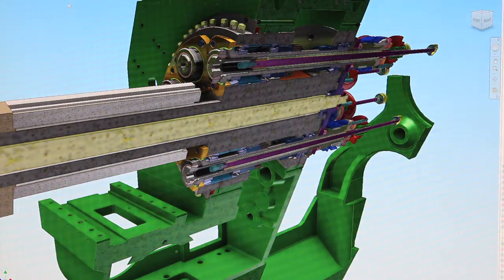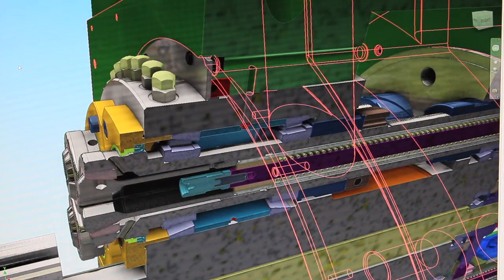First, the headstock is bored and the OD of the carrier ground for adding OD seals to the carrier, seen here in red.